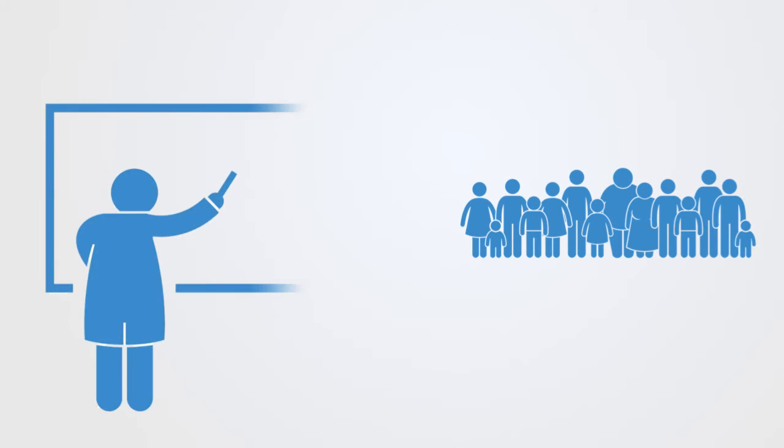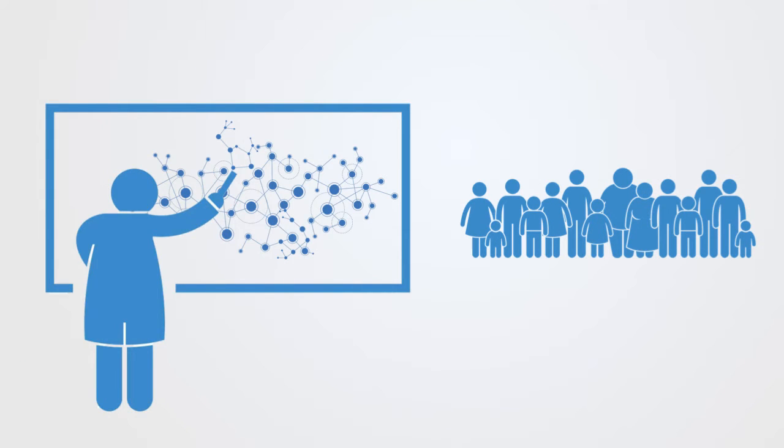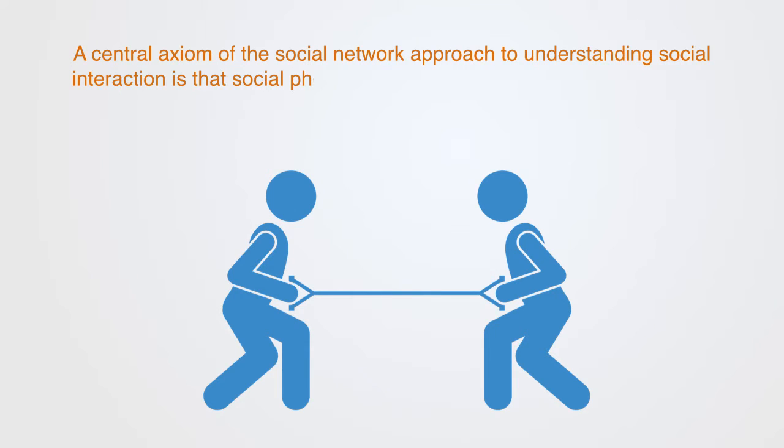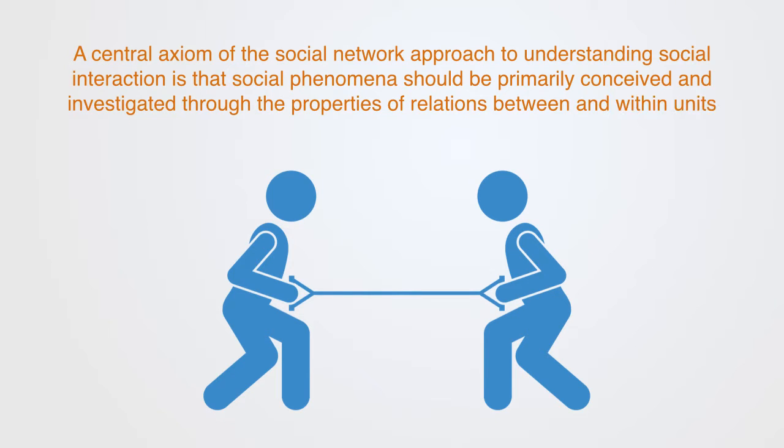Social network analysis is one of the major paradigms within contemporary sociology and it's also employed in many other social sciences. It offers us a powerful formal language with which to model and analyze the structure of social relations and how this structure of connectivity defines the overall social system. The big idea here is that of connectivity. A central axiom of the social network approach is that social phenomena should be primarily investigated through the properties of the relations between and within the units, instead of the properties of these units themselves.